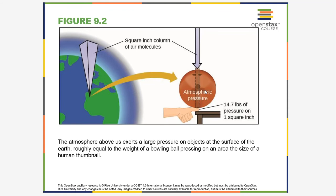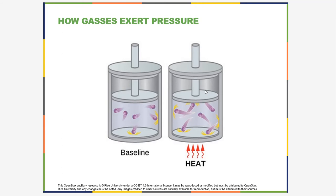How do gases actually exert pressure? As discussed in other chapters, molecules at any temperature above absolute zero are moving. In the case of a gas, the molecules have a lot of freedom and are very far apart from each other, but they are moving. Gas molecules can bounce into each other as well as the sides of the container. When they hit the sides of the container, they exert a pressure.